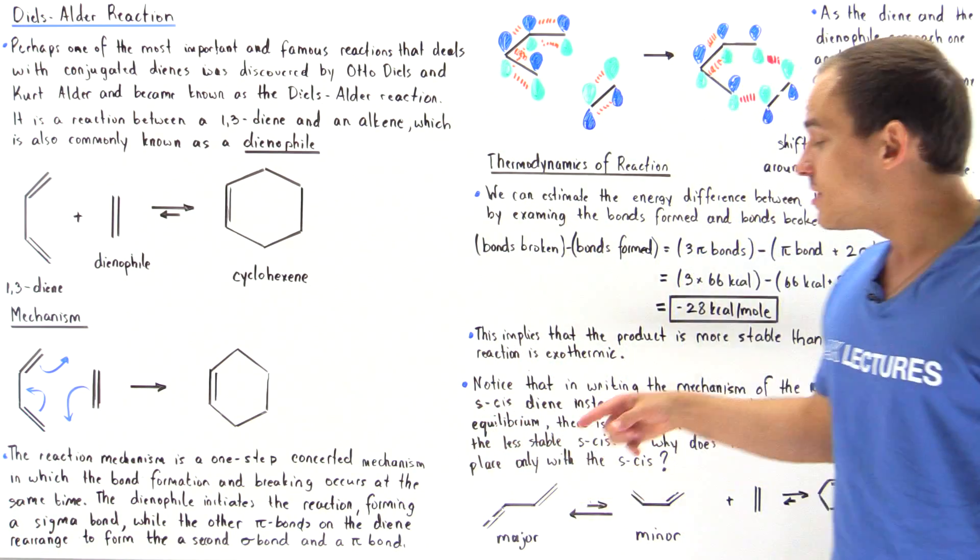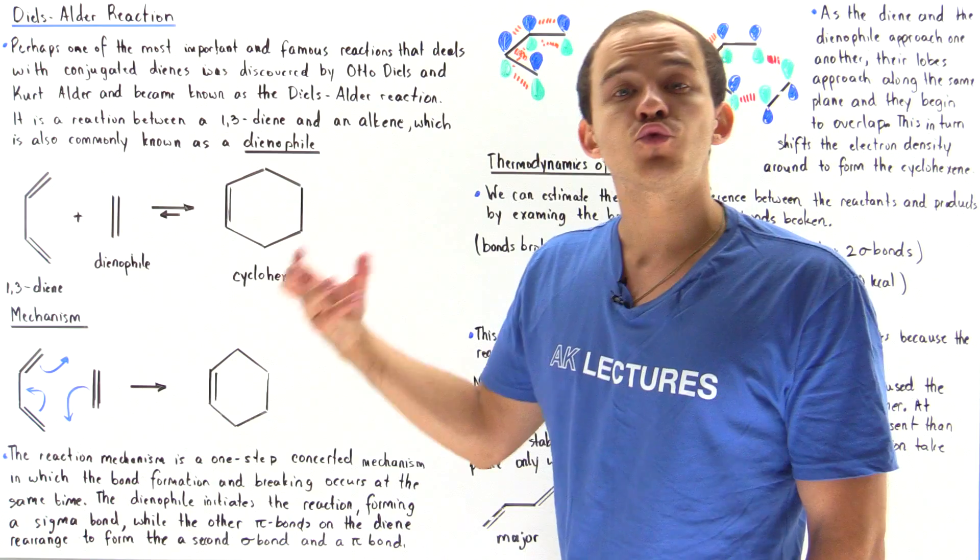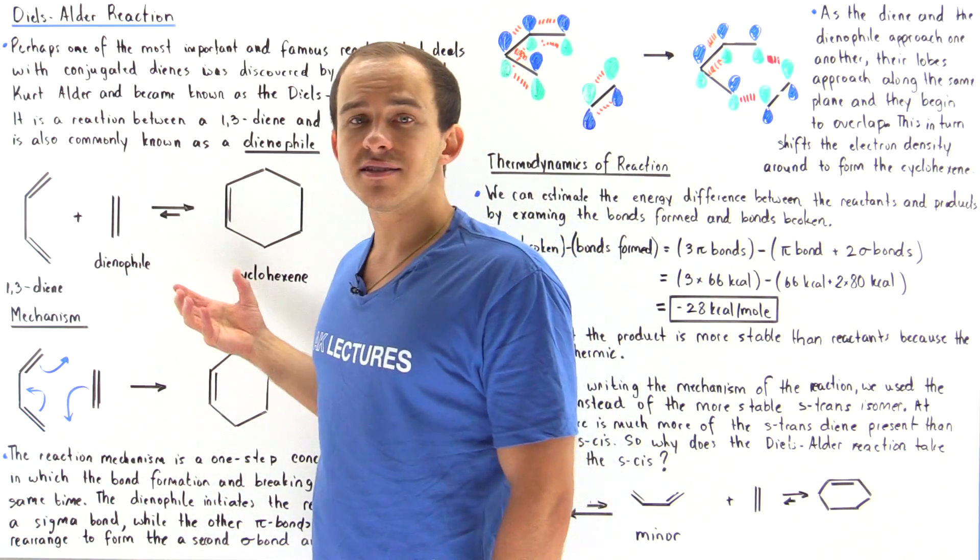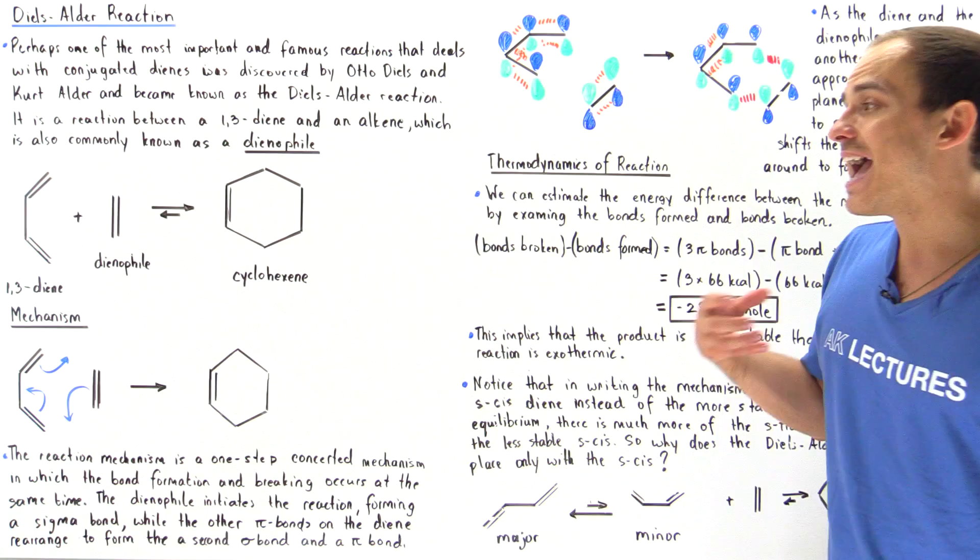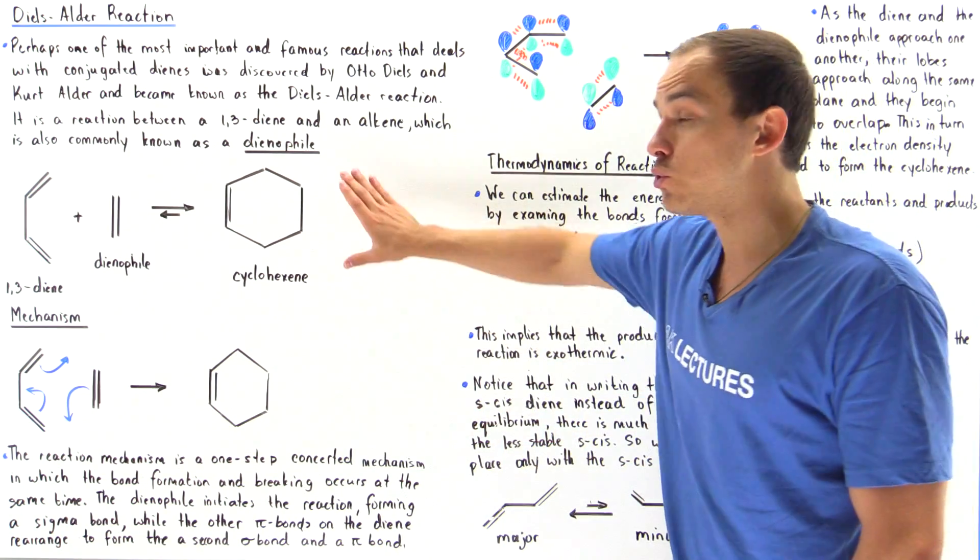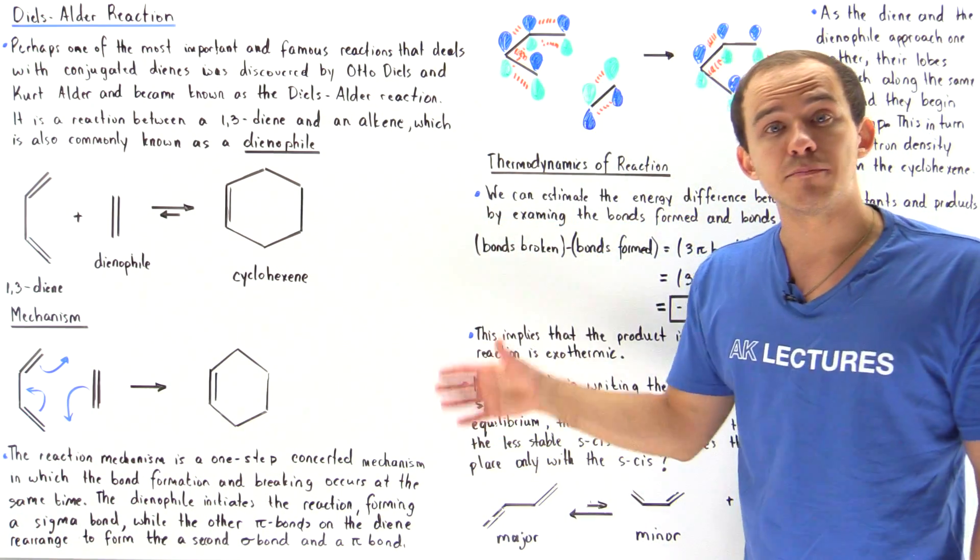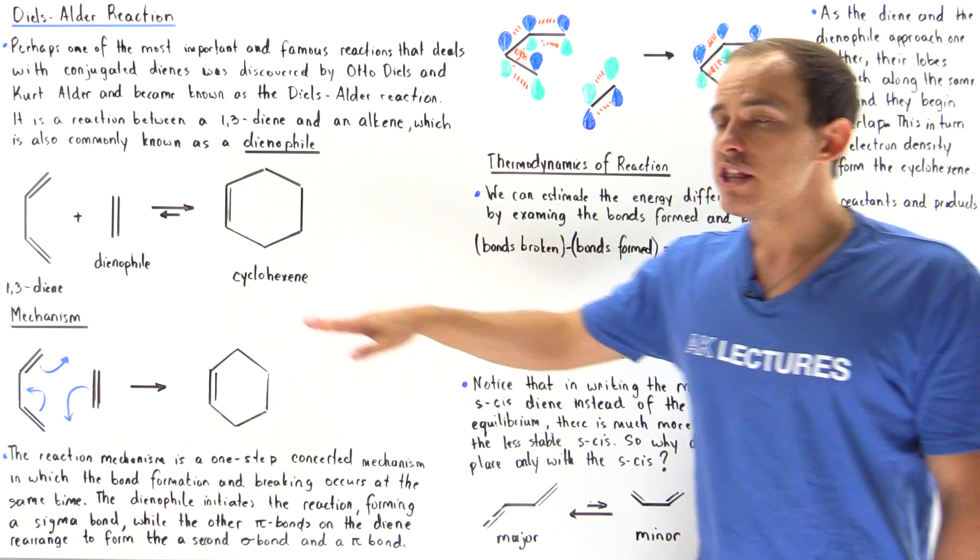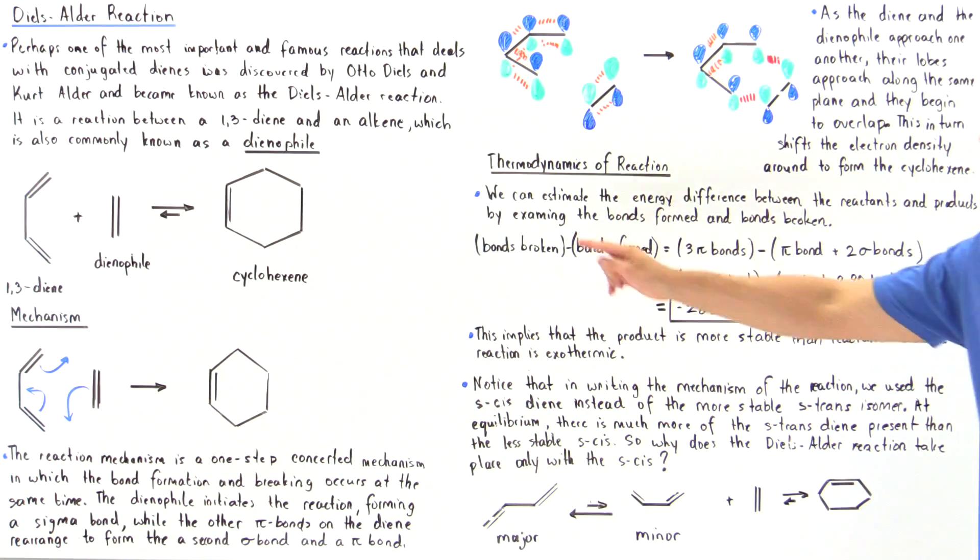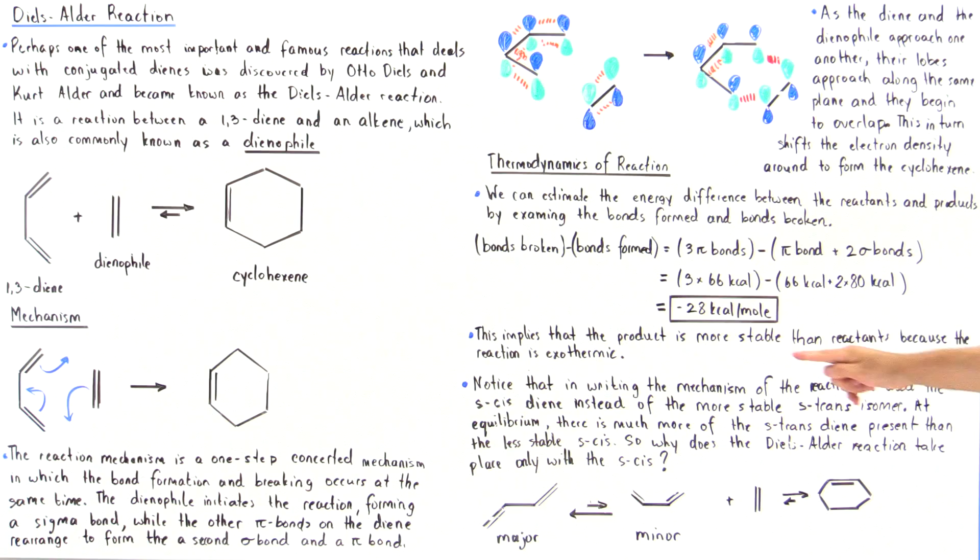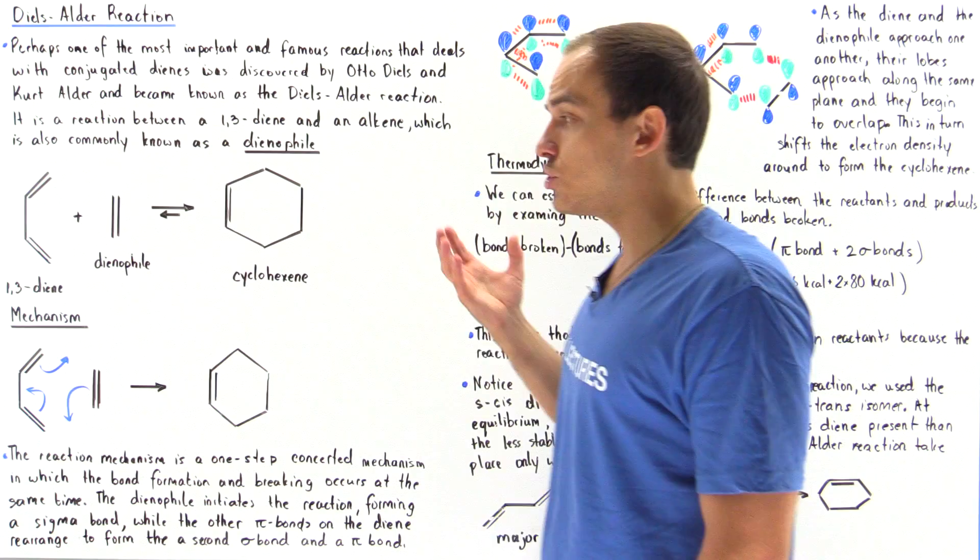The negative means that energy is released in this process, and that means it's an exothermic reaction. The products are more stable and lower in energy than our reactants. This implies that our cyclohexene product is more stable than our two reactants, and the Diels-Alder reaction is in fact an exothermic reaction.